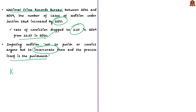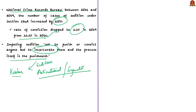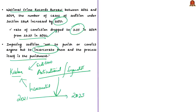The aim of imposing sedition is not to punish or convict anyone but to incarcerate them — the process itself is the punishment. If charged with sedition, media outlets may start treating the person as anti-national and social media amplifies that perception. So the process itself destroys one's character. Even if acquitted by the court after two years, the agony undergone is a very big punishment. For these reasons, the sedition provisions in IPC should be revisited.